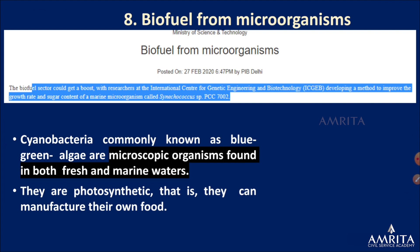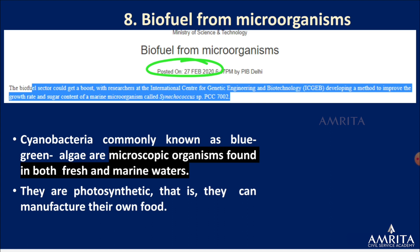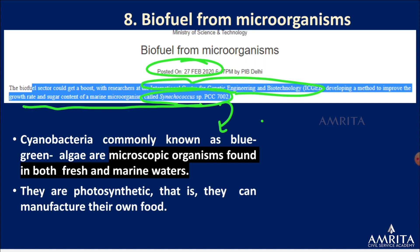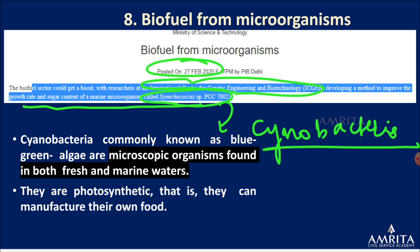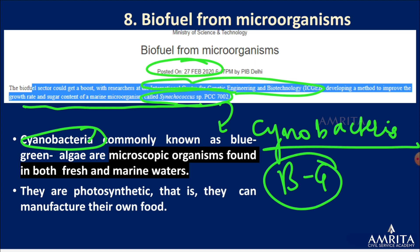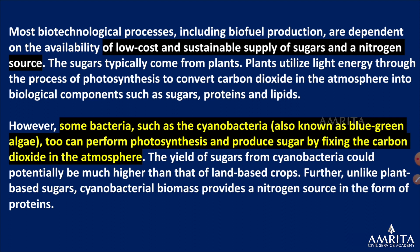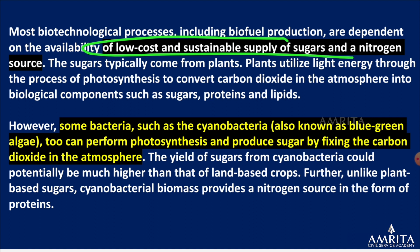Biofuel from microorganisms — the International Centre for Genetic Engineering and Biotechnology has found a method to improve the growth rate and sugar content of a marine microorganism called Cyanococcus PCC 7002, a cyanobacteria. Cyanobacteria is also called blue-green algae. It undergoes photosynthesis and produces its own food. Biofuel production requires a low-cost and sustainable supply of sugar.